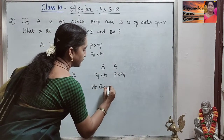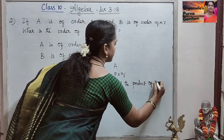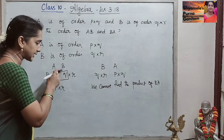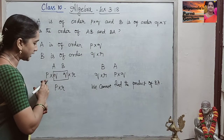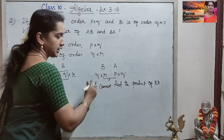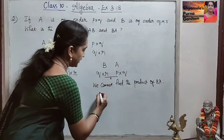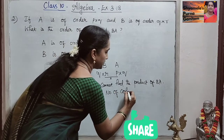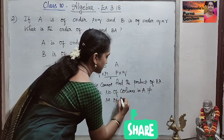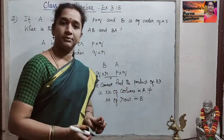So we cannot find the product of BA. When we see here, this column and this row — the column of the first matrix and row of the second matrix — is the same for AB, so we can find that product and write it as P cross R. But for BA it is not possible, since the number of columns in B is not equal to the number of rows in A. Since these both are not the same, we cannot find the product BA. This is not possible. Thank you.